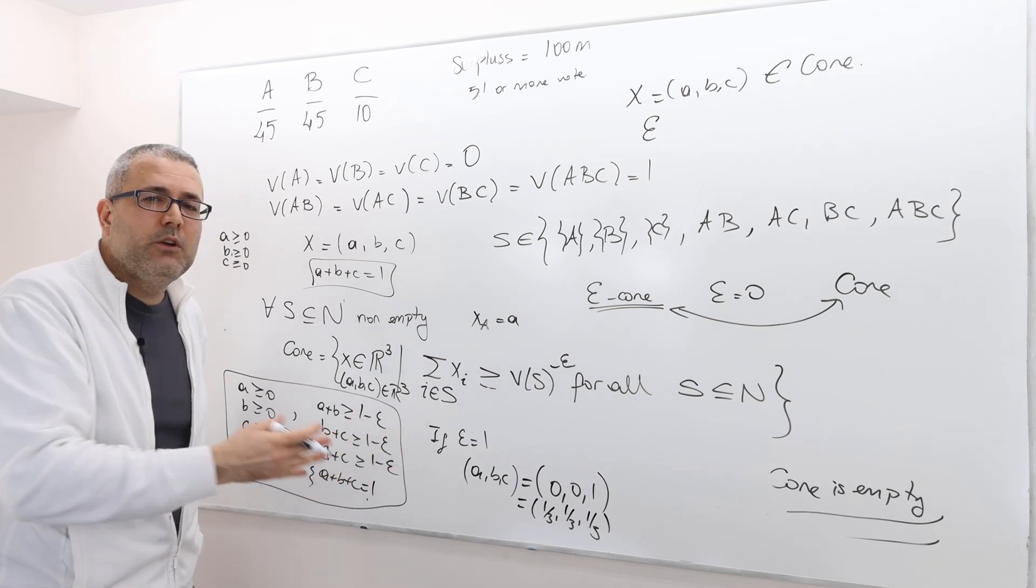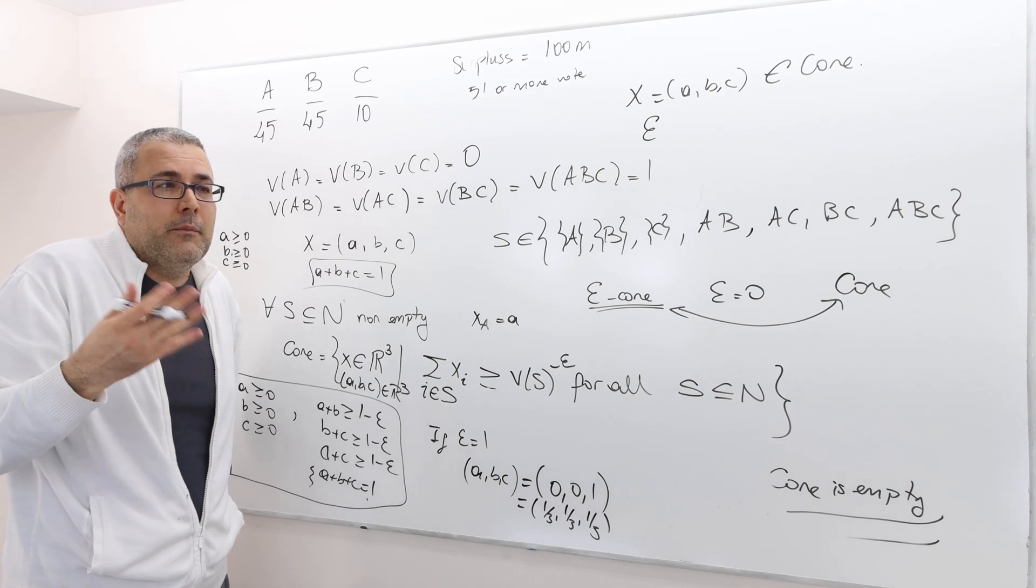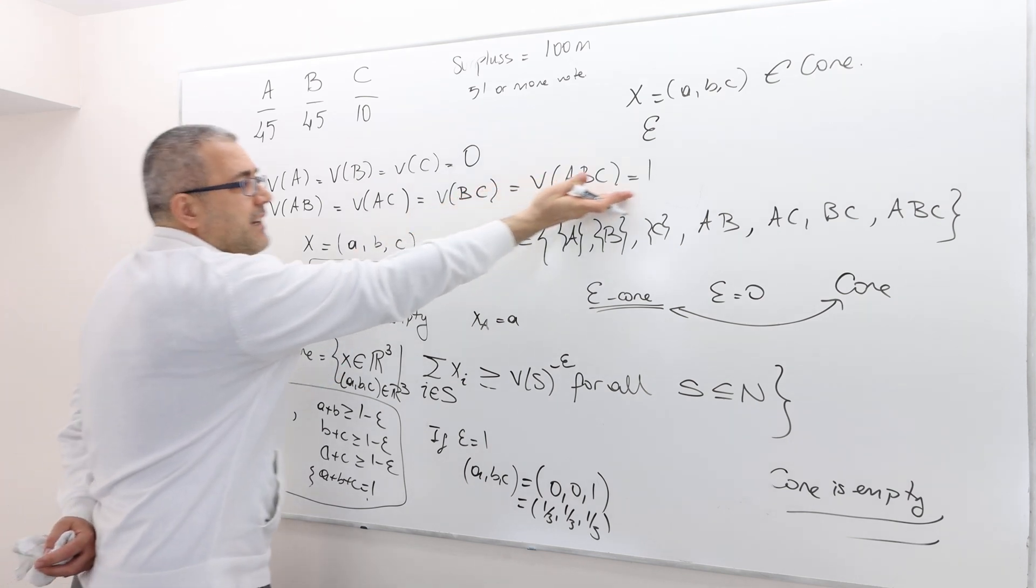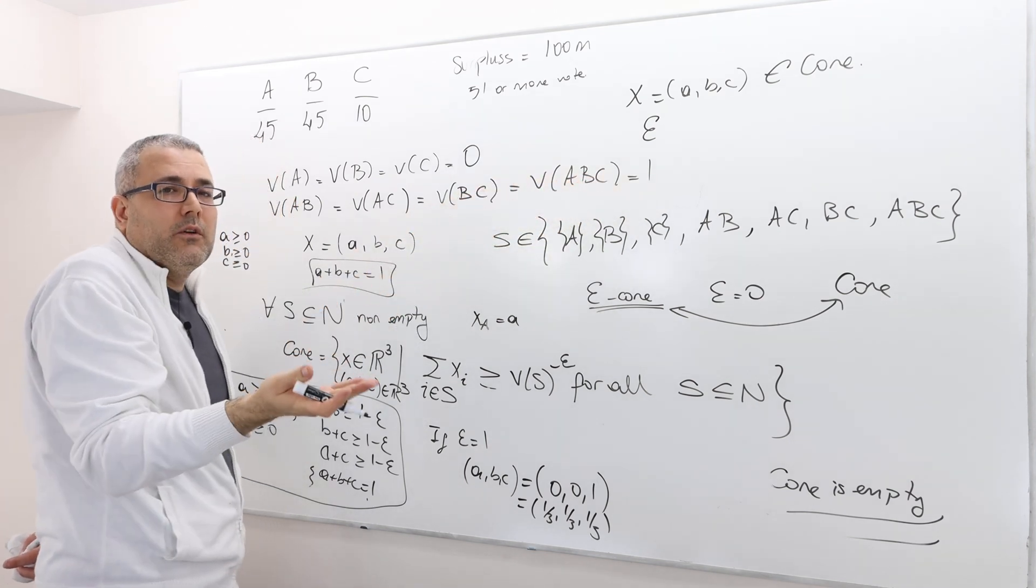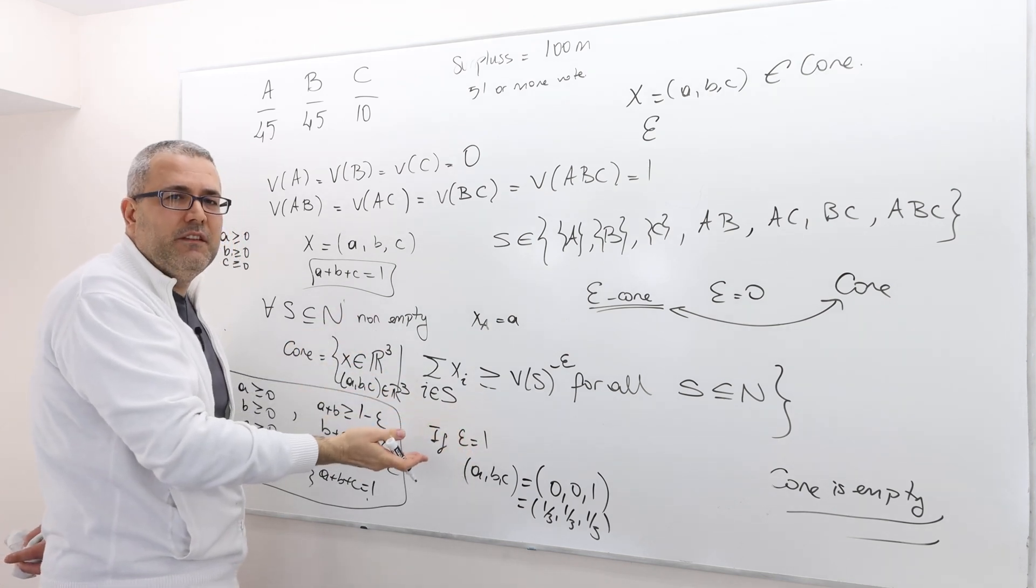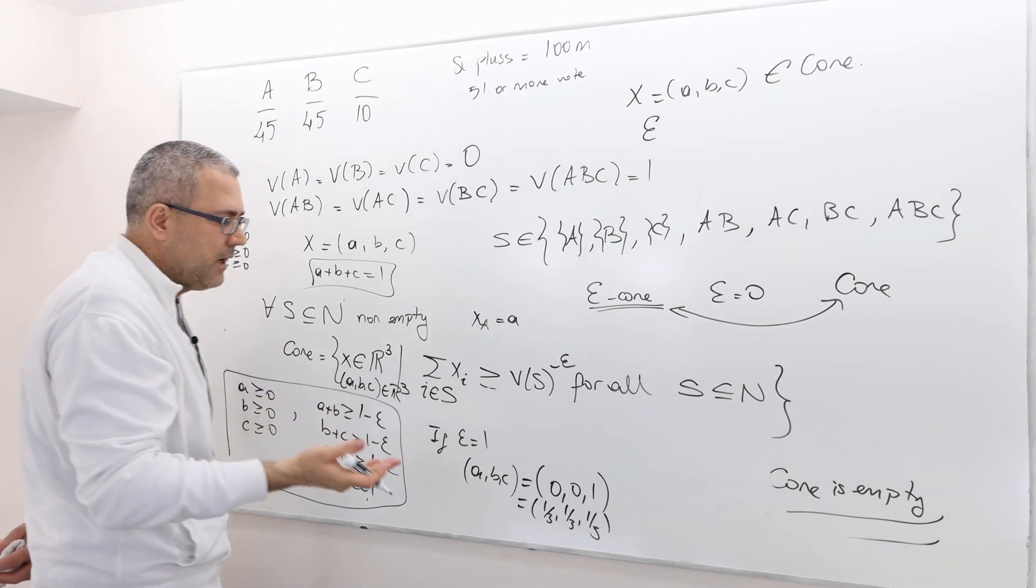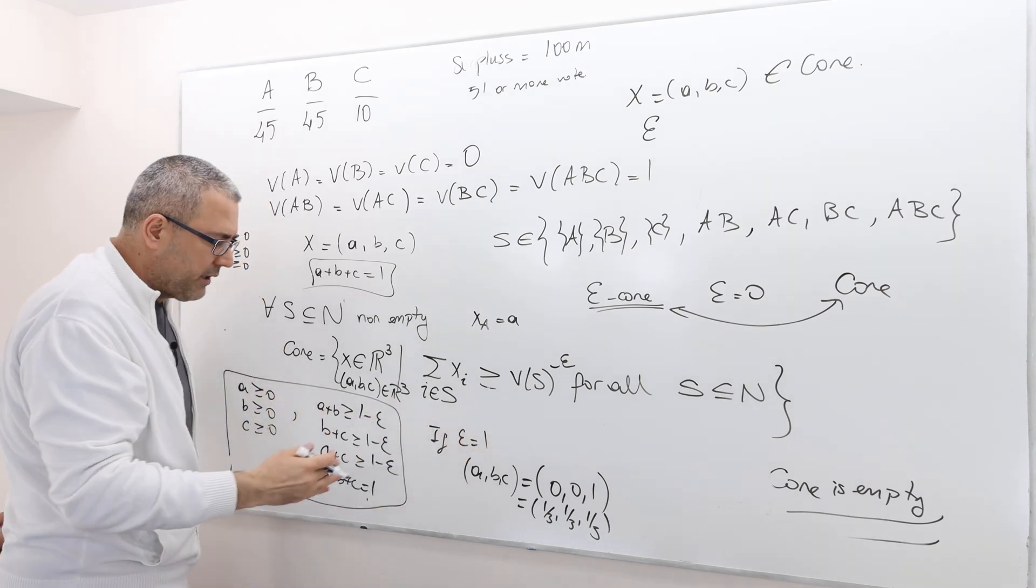Well, but epsilon equals 1 is a huge sort of error. I mean, remember, the maximum worth is 1. So it means these guys have huge incentive to deviate, in fact. So this 1 core is like useless, pointless. So we need to find a smaller epsilon.